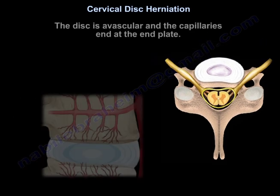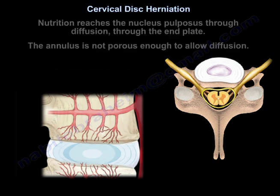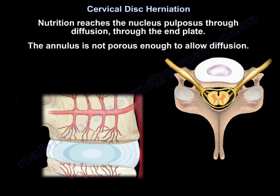The disc is avascular and the capillaries end at the end plate. Nutrition reaches the nucleus pulposus through diffusion through the end plate. The annulus is not porous enough to allow diffusion.